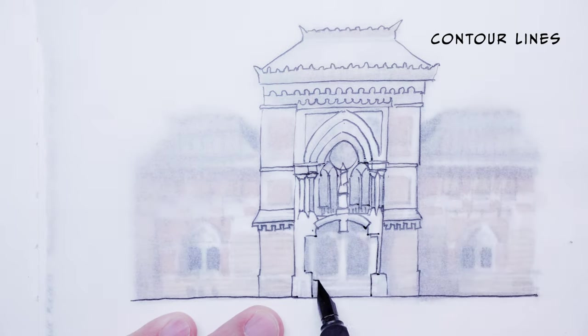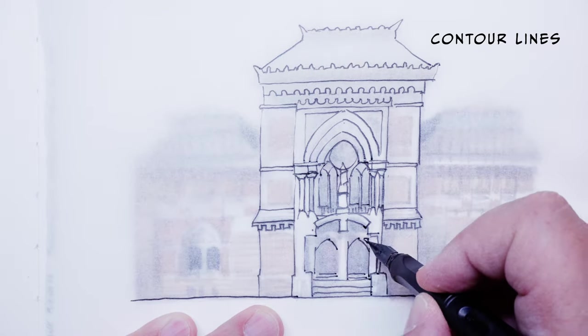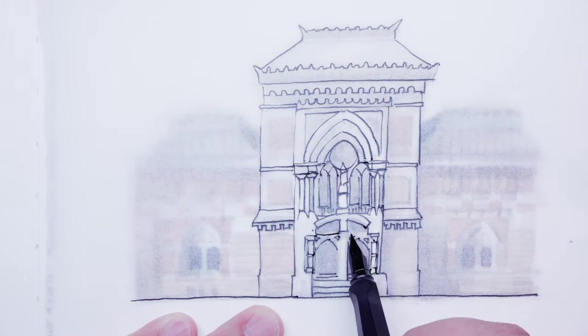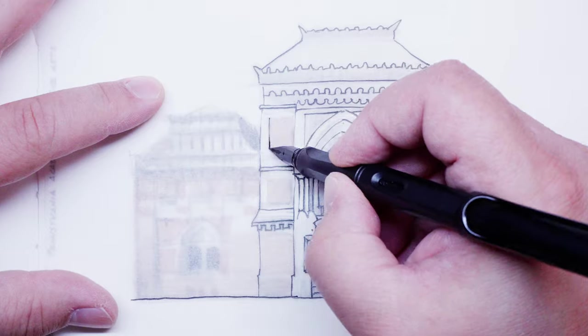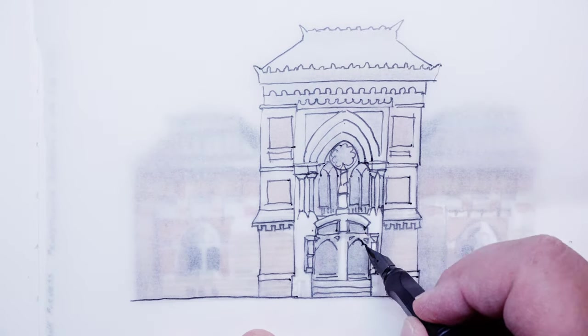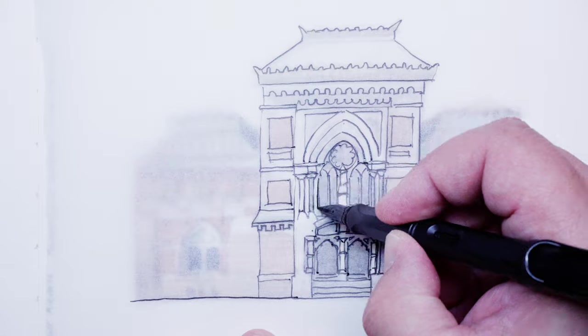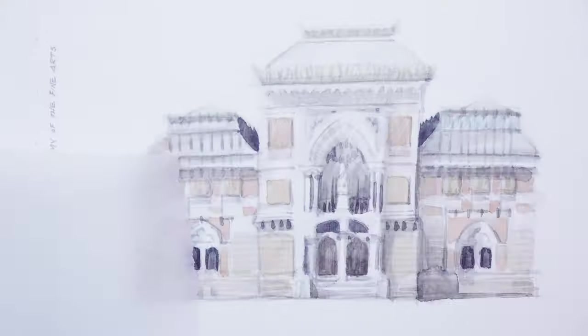Contour lines. Contour is the outline or outermost edge of a plane that defines a shape or form. A contour line can be continuous or broken, expressive of the form, or simply show the object's edge.